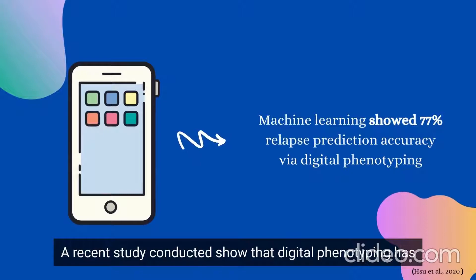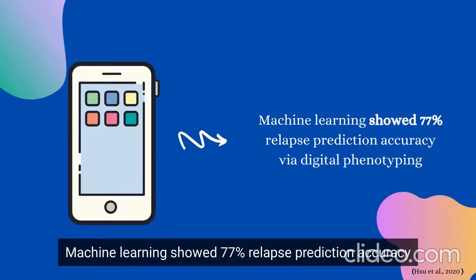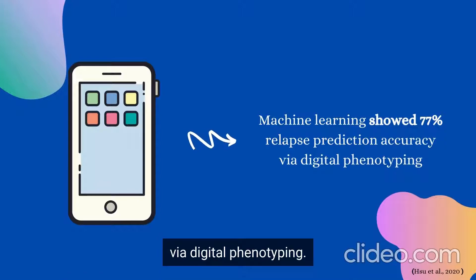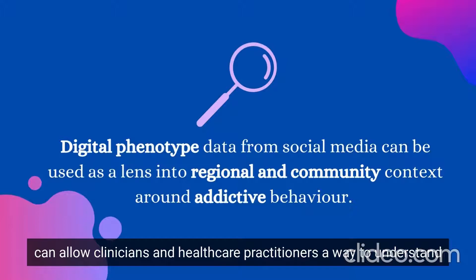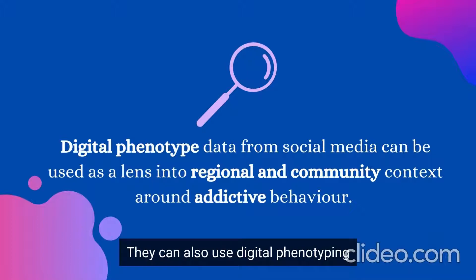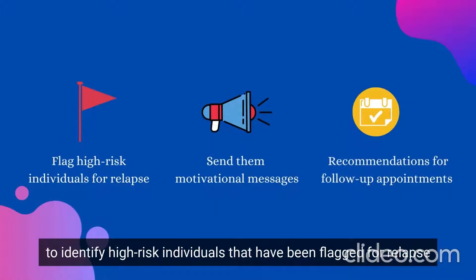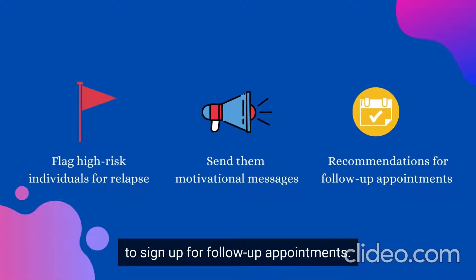A recent study showed that digital phenotyping has the potential to predict relapse of substance use after clinical interventions, with machine learning achieving 77% relapse prediction accuracy. Data from digital phenotyping can allow clinicians and healthcare practitioners to understand regional and community contexts around addictive behaviors, identify high-risk individuals flagged for relapse, and send them motivational messages and recommendations to sign up for follow-up appointments.